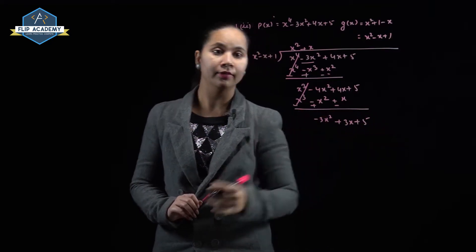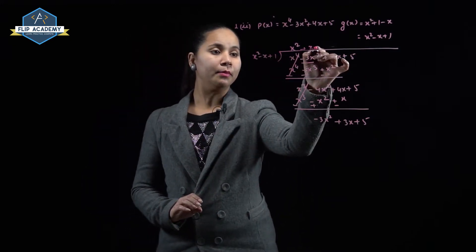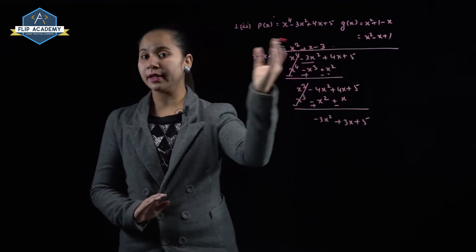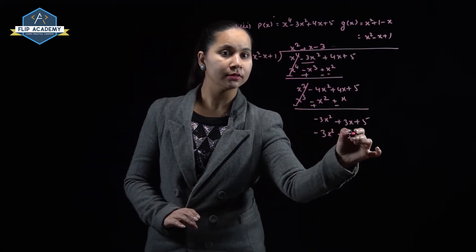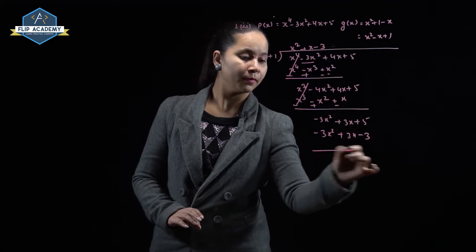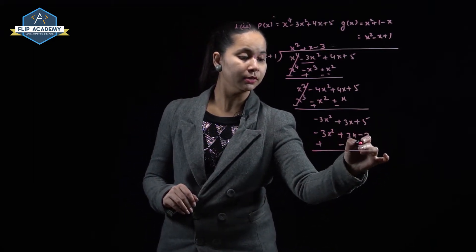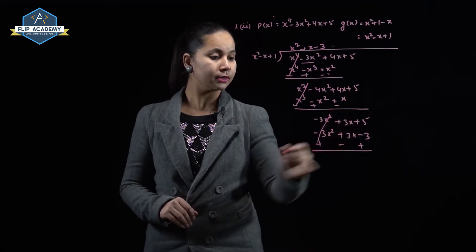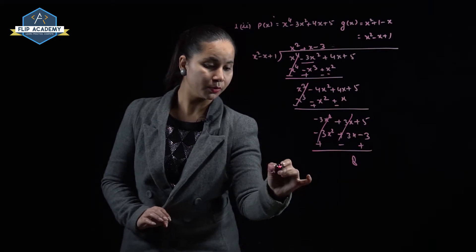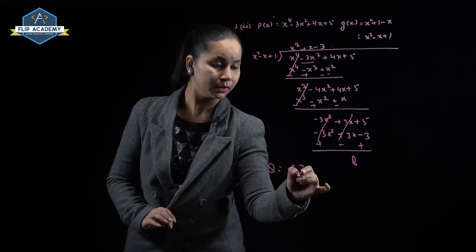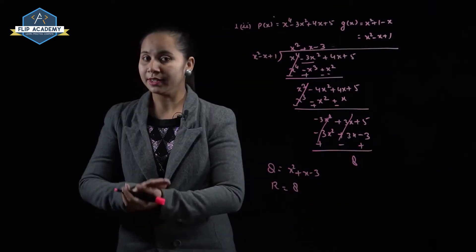x² goes into -3x², -3 times. Multiply -3 by (x² - x + 1) to get -3x² + 3x - 3. Change the sign: minus, plus, plus. -3x² cancels, 3x cancels, and 5 + 3 = 8. So quotient q(x) = x² + x - 3 and remainder r = 8.